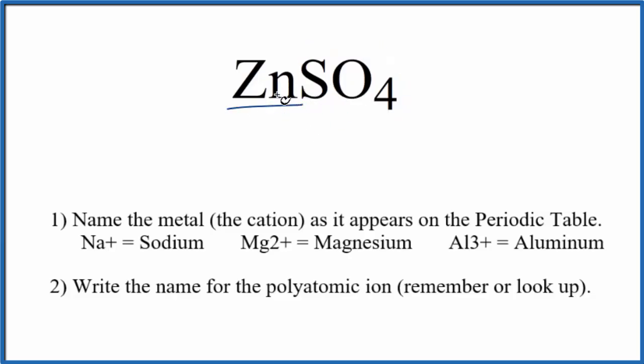Then zinc, that's a metal. It's actually a transition metal. So we have this metal and the polyatomic ion made up of nonmetals. This is an ionic compound.